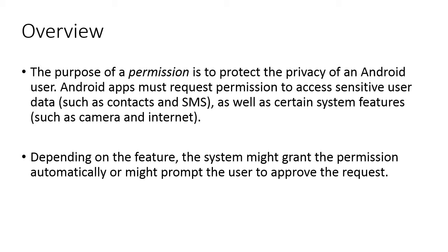If the user does not trust the application downloaded from an unauthorized source, then in that case the user's sensitive data will not be accessed in any way. Depending on the feature, the system might grant the permission automatically or might prompt the user to approve the request. Either the system automatically shows permissions on the user's screen indicating which permissions are installed and provided in this application, or at some state when any functionality runs, its permissions should be checked first — as we saw in the last lecture — checking in the manifest whether that permission exists, and if it does, it must be allowed before the service can be accessed.